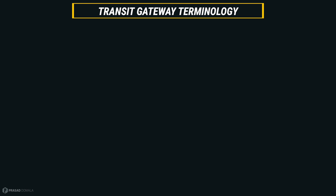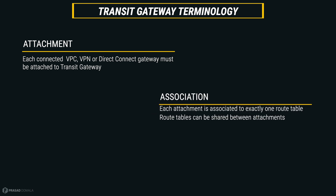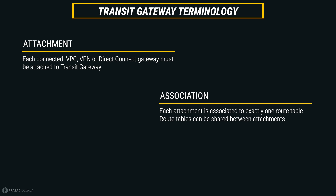Before jumping into the demo, I'd like to talk about the terminology of Transit Gateway. The first one is attachment — we need to create an attachment for each VPC, VPN, or Direct Connect Gateway that we want to attach to Transit Gateway. Next we have associations. Each attachment is associated with exactly one route table, and we can define all our routes in that associated route table. Route tables can be shared between attachments, but each attachment can have only one association, which helps us manage routes efficiently. We can have all common routes in the main route table and create separate route tables for specific attachments to control routing.